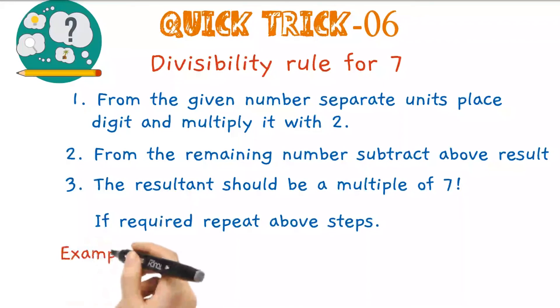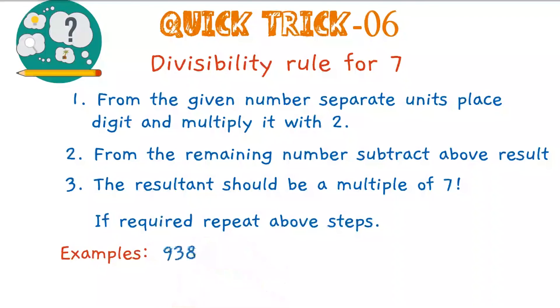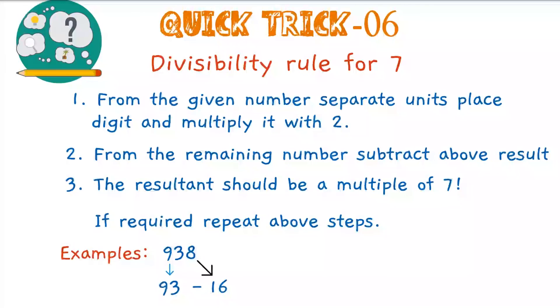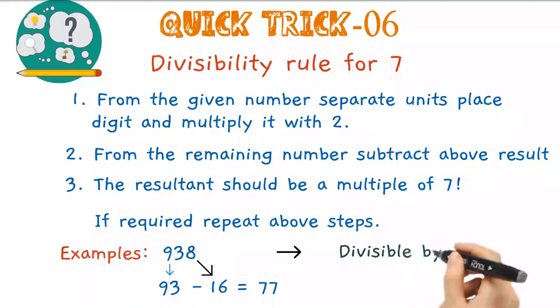Let me take up one example. Take a number 938. First, the unit's place digit 8 is to be multiplied with 2. It gives 16. Next, take the remaining number 93 and subtract 16 from it. 93 minus 16 gives 77. As 77 is a multiple of 7, we can say that 938 is divisible by 7.